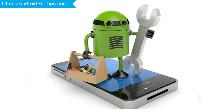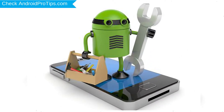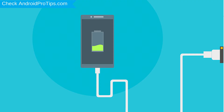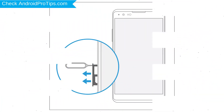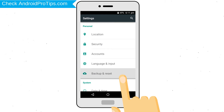Before resetting your mobile, your battery must be above 50%. Remove SD cards and SIMs. Back up your Android mobile data if possible.